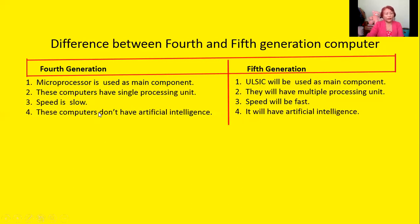Fourth generation computers do not have artificial intelligence — they do not have any thinking power or decision-making power. But fifth generation computers will have decision power and thinking power like human beings. So these are the features of fourth and fifth generation computers.